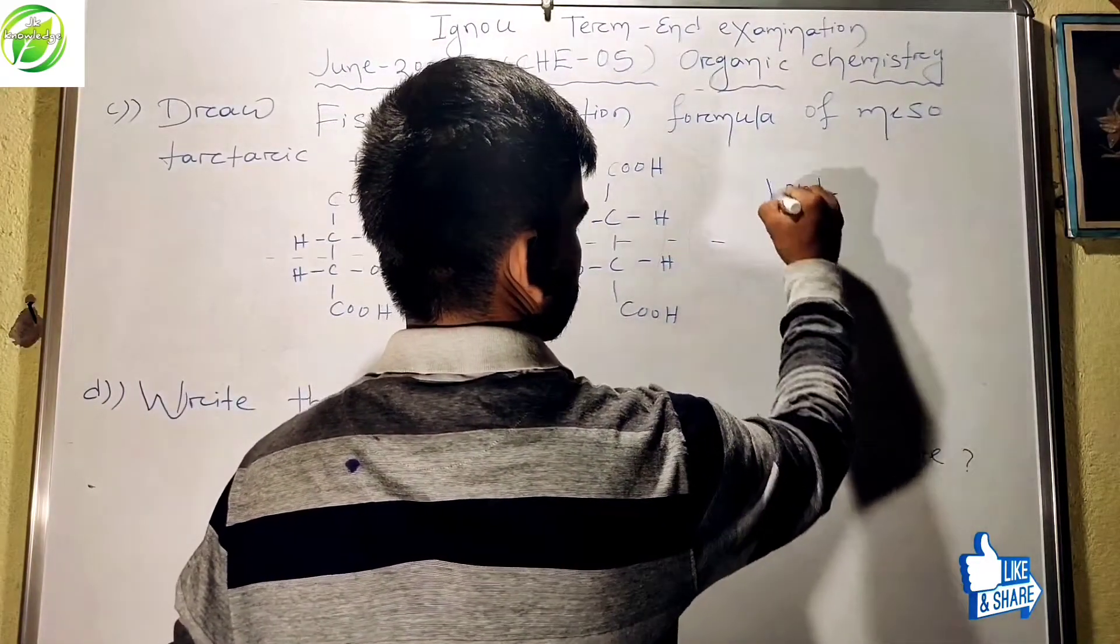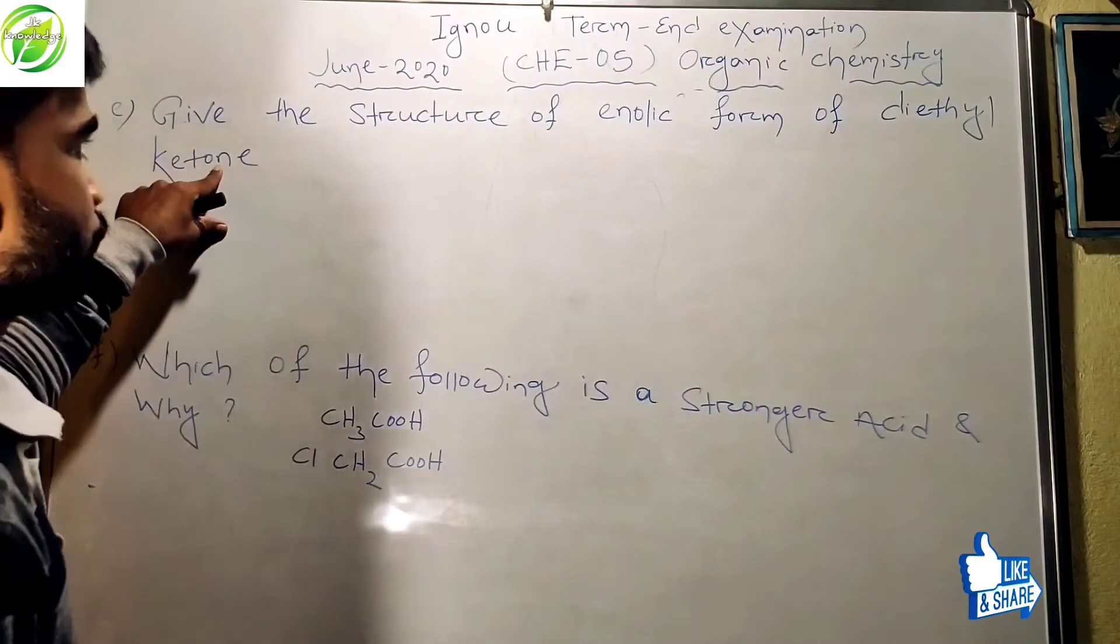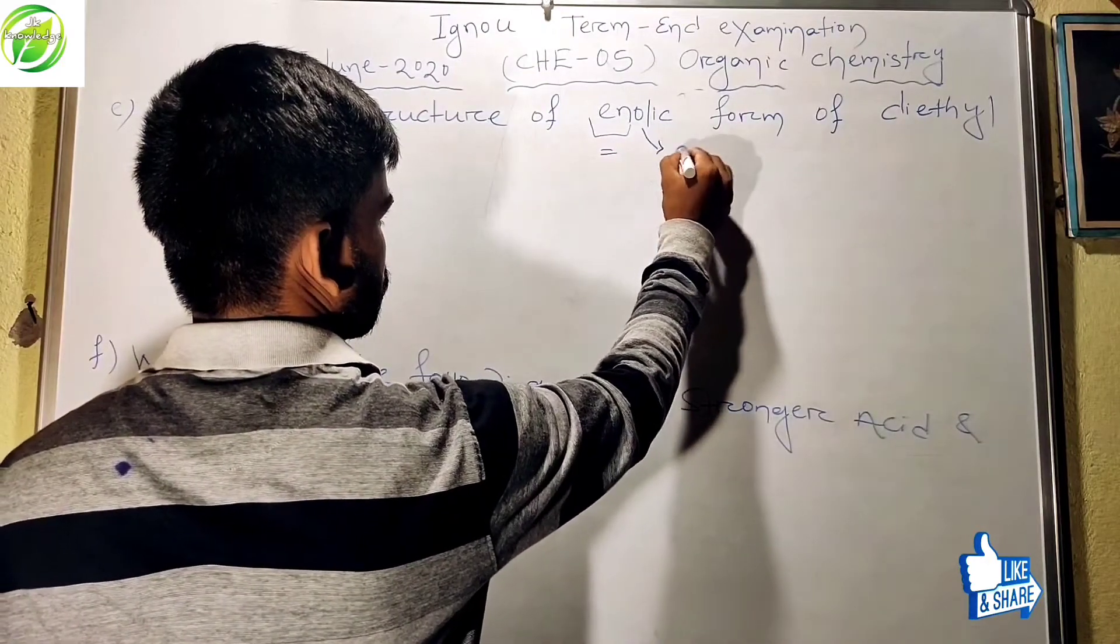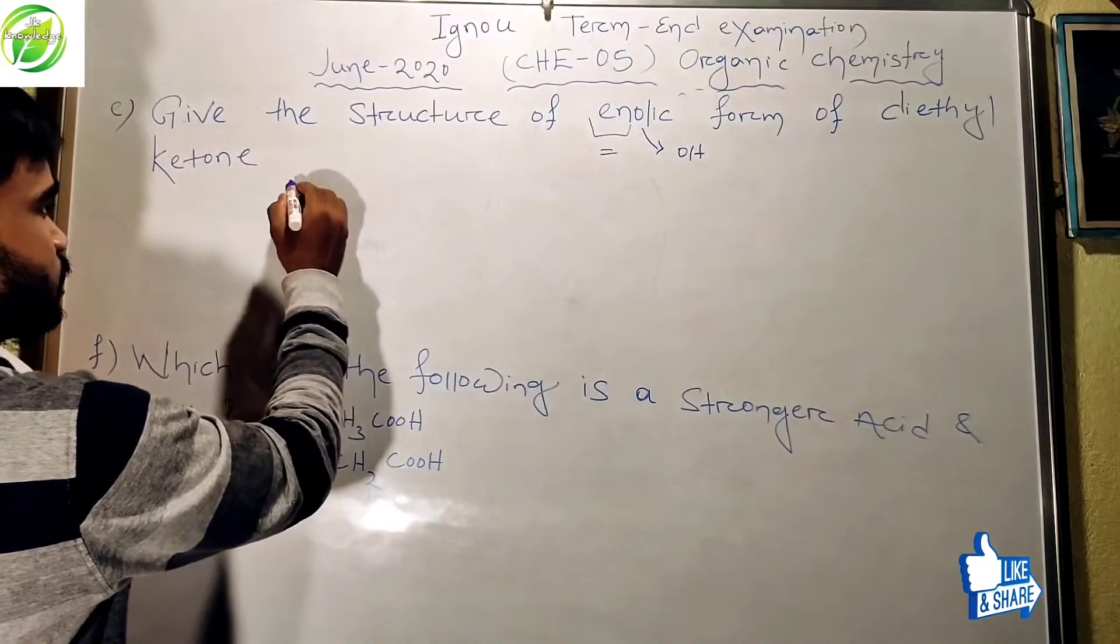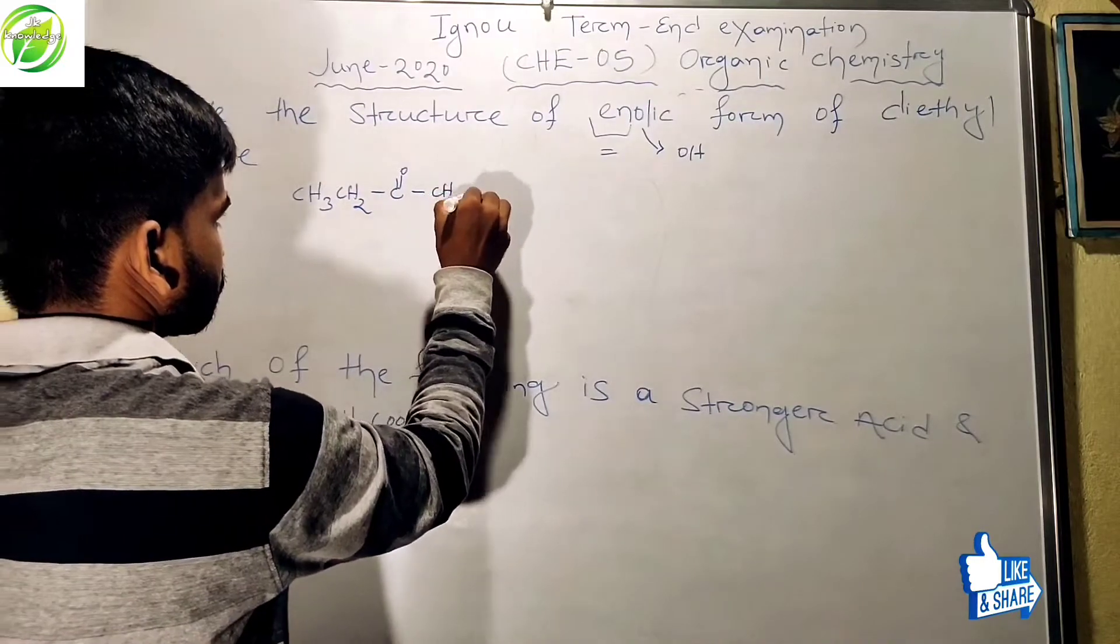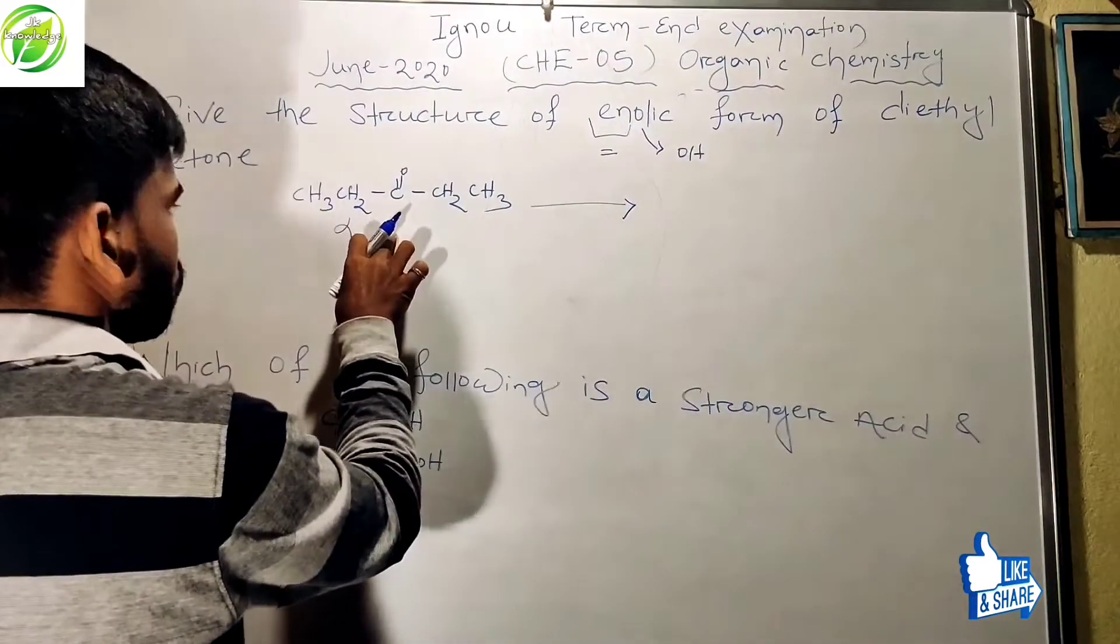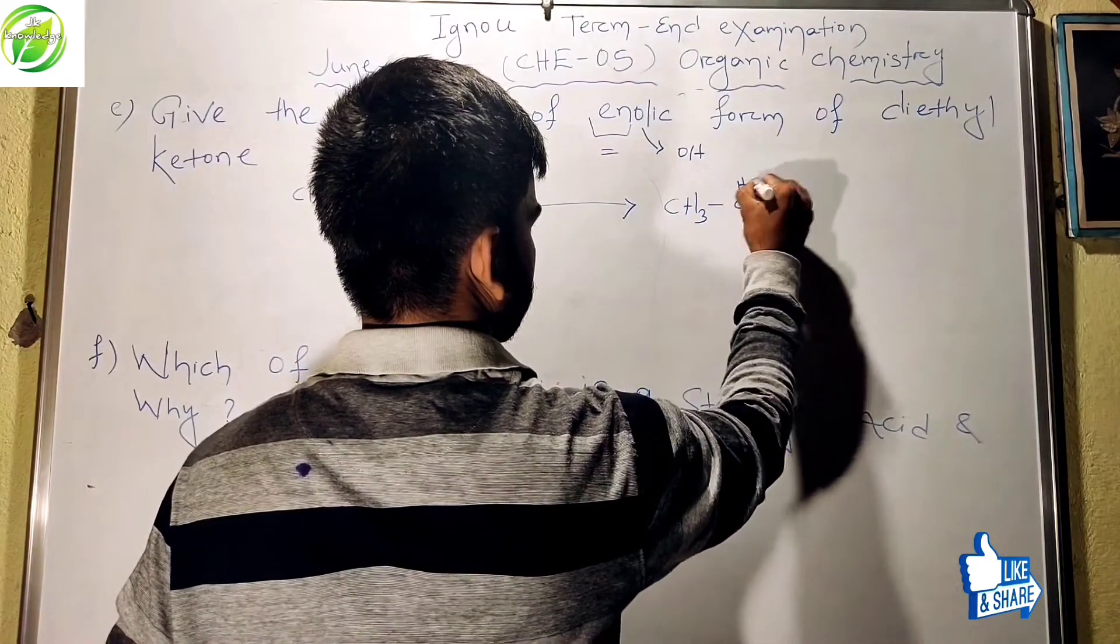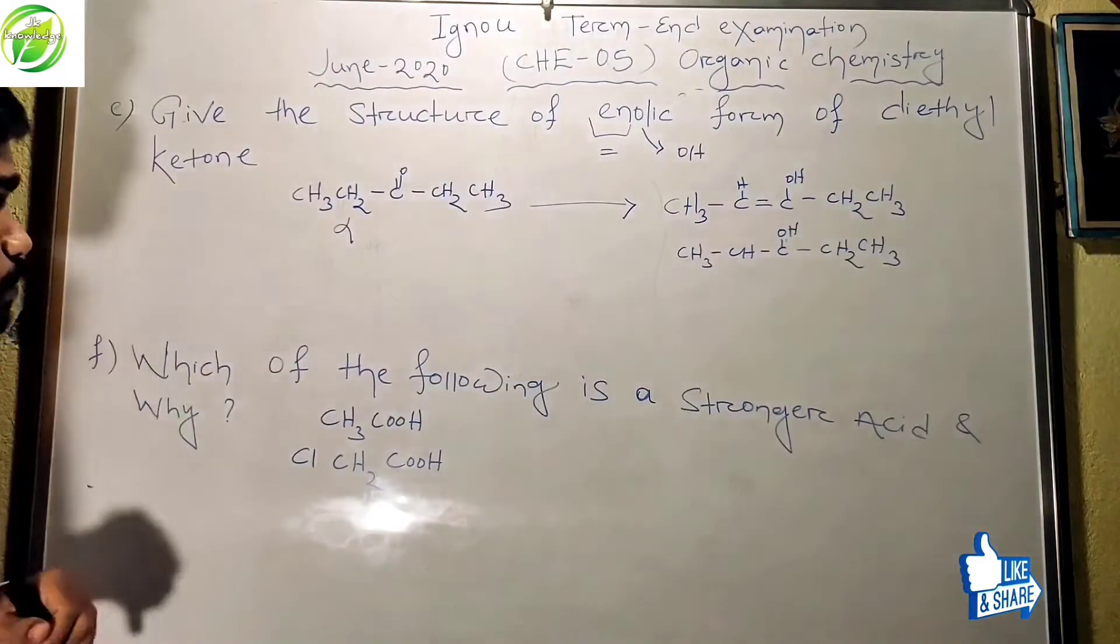The next question is: give the structure of enolic form of diethyl ketone. Friends, this question arises from keto-enol tautomerism. This 'en' is used for double bond and this 'ol' is used for OH group. This diethyl ketone structure we draw like this. This is the alpha position. The enolic structure of this diethyl ketone we write like this.